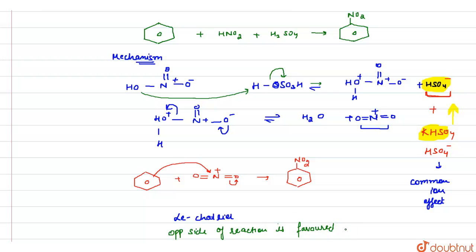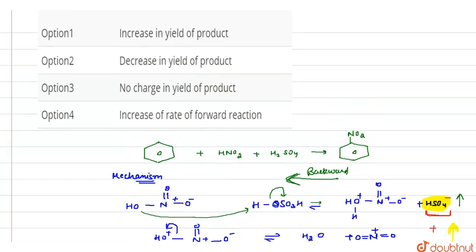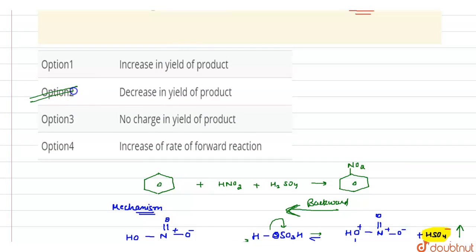To maintain the equilibrium, as concentration of HSO4 increases, the reaction will take place towards the backward side such that overall concentration of HSO4 decreases. That's why due to this, decrease in the yield of product takes place.